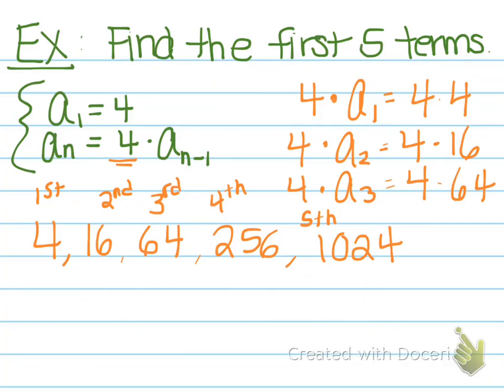Just like in arithmetic recursive sequences, you need the term before to be able to get the next term and you can clearly see that because each of these values we needed were the values that came before.